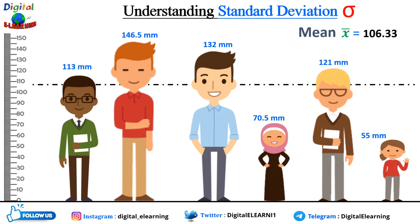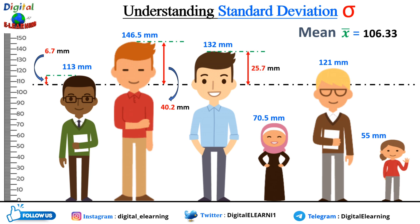With the help of this mean and the individual values, you calculate the difference of the mean from each individual value. For the first friend it comes to 6.7, for the second it is around 40.2, for the third around 25.7, for the fourth around minus 35.8 (because it is less than the average), for the fifth it is 114.7, and for the sixth it is close to minus 51.3. This is how you calculate the difference from the mean for each individual value.